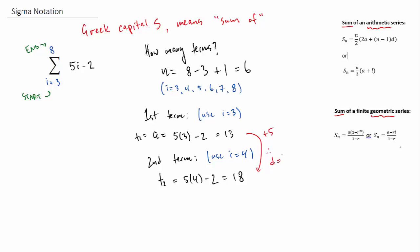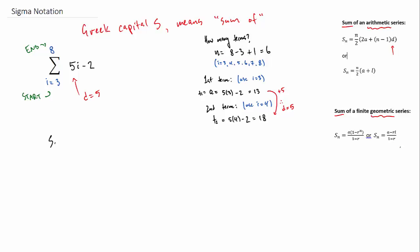Then use the next index number, i equals 4, and that will tell us that our second term is 18. And what we can see is that we're going up by 5, so our common difference is 5.